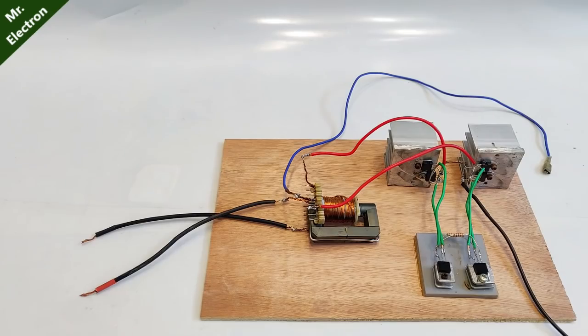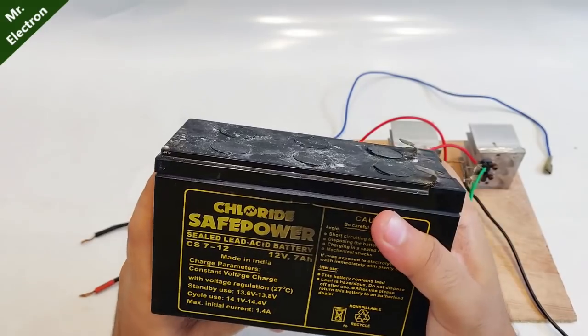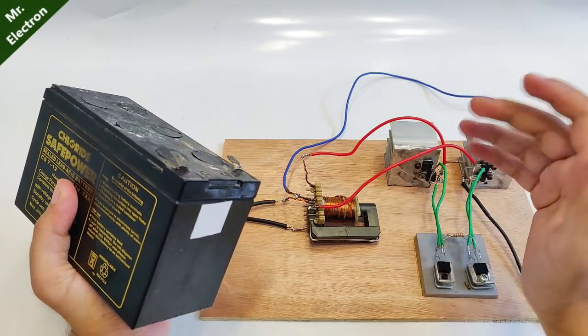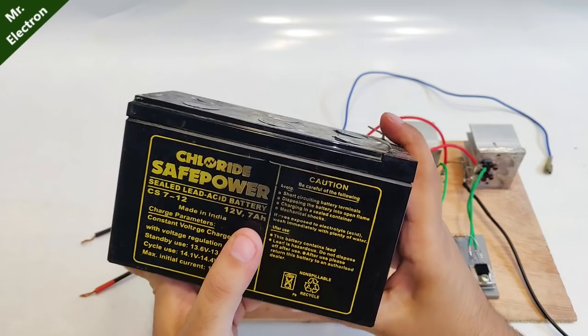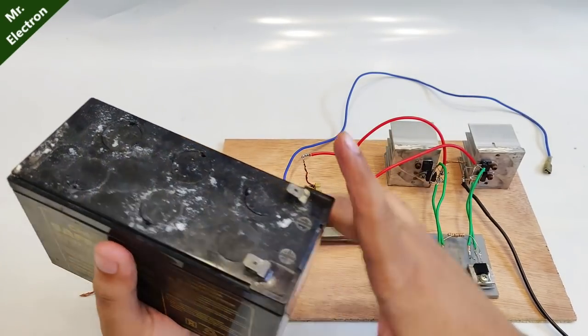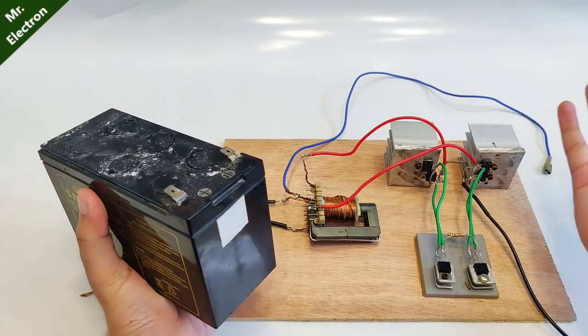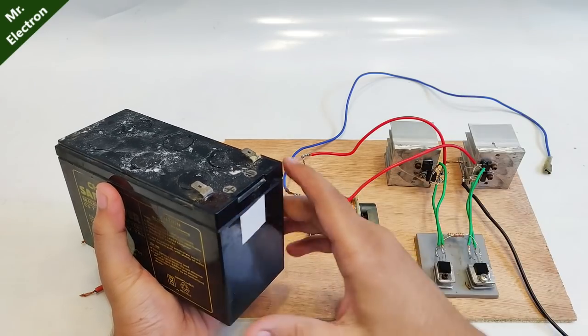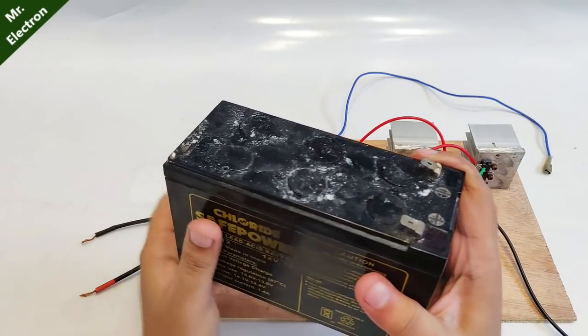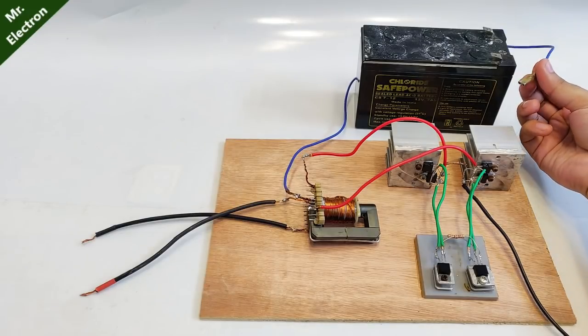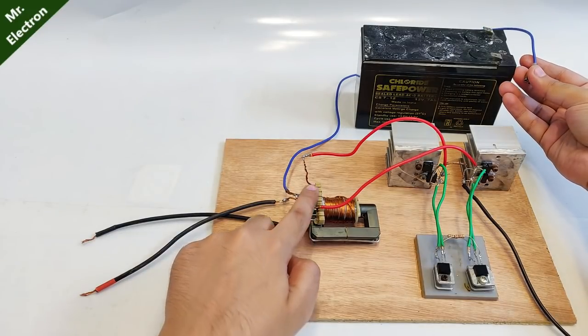At the moment I'm testing the output efficiency. Instead of a solar panel as input, I'm going to use this 12 volt 7Ah battery to see the current increment from input side to output side, if there is any, or if it needs modification.